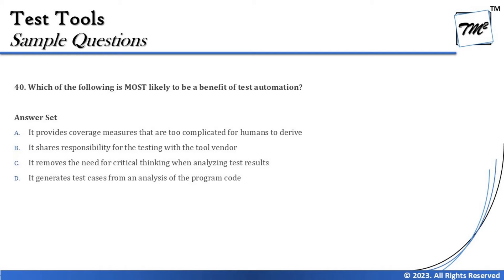Option C says it removes the need for critical thinking when analyzing test results. This is one of those catchy options many people would love to pick, thinking that with automation they don't need to invest time analyzing results. But automation will just give you facts and figures — it's the tester who still needs critical thinking to judge and analyze results. We analyze to see if there's anything to worry about, any gaps to cover with additional tests. So saying testers need to stop thinking with automation is wrong.